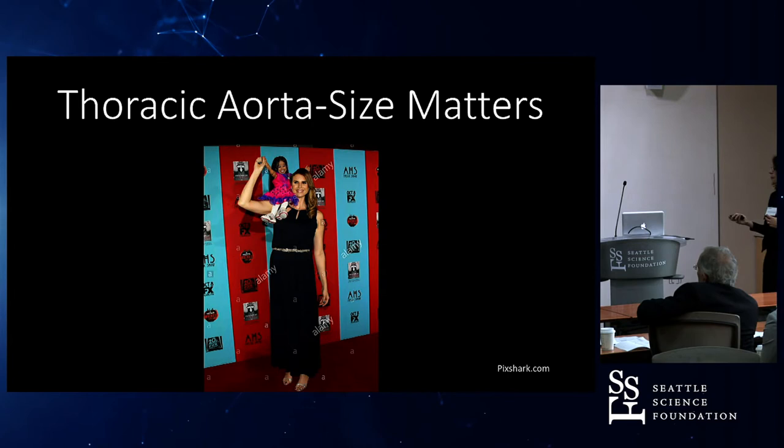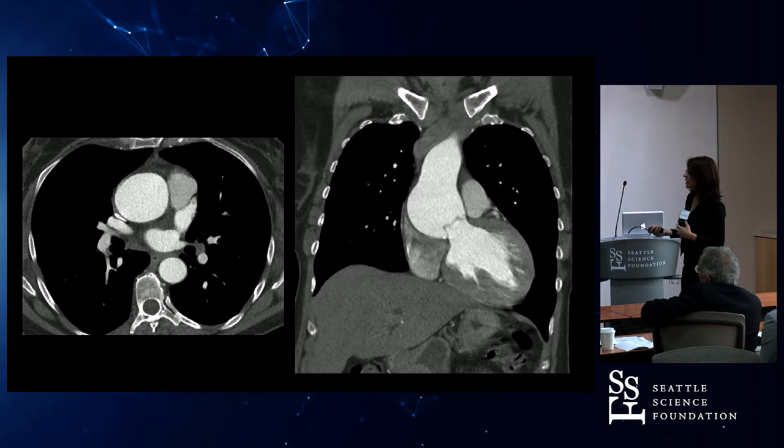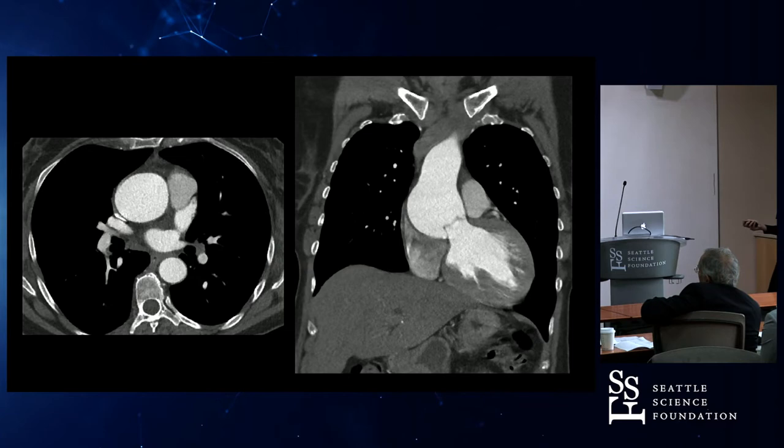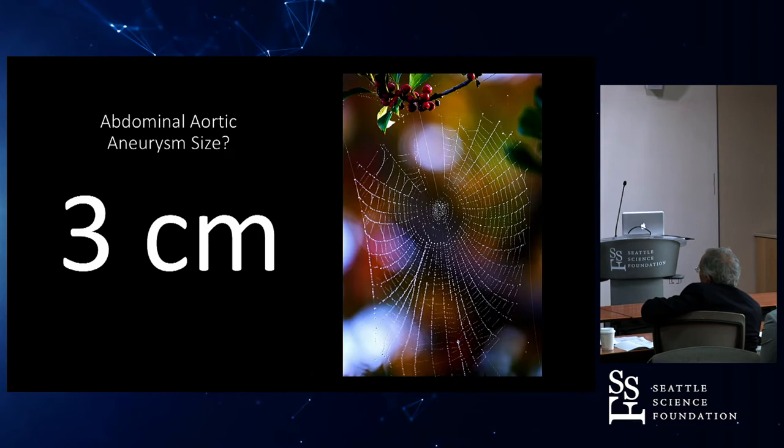Here's a case — a nice gated study showing an ascending thoracic aortic aneurysm, a coronal image of that, and then a 3D version of it.